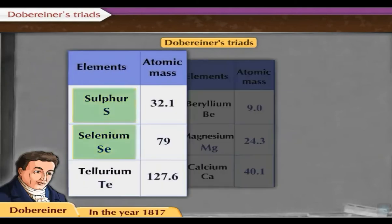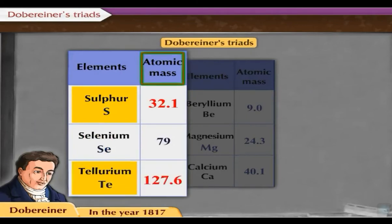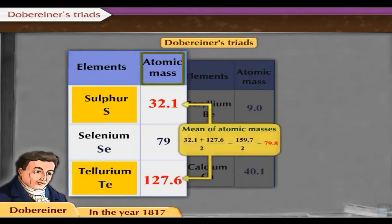Sulfur, selenium, and tellurium also form a triad. The atomic mass of sulfur is 32.1 and that of tellurium is 127.6. Their mean value is 79.8, which is equal to the atomic mass of selenium, which is 79.0.